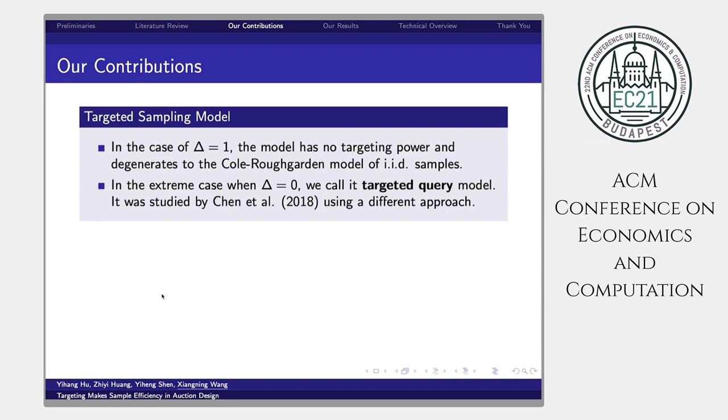Let's see some different choices of delta. In the case of delta is 1, the model has no targeting power, and it degenerates to the Cole Roughgarden model of IID samples. In the extreme case, when delta is 0, we call it targeting query model. This model has the most powerful targeting power. It was studied by Chen et al. in 2018 using a very different approach from us.